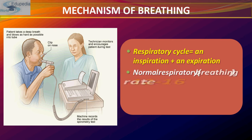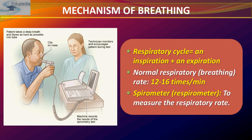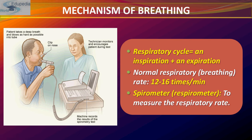The respiratory cycle consists of one inspiration plus one expiration. The normal breathing rate is 12 to 16 times per minute. A spirometer is a respirometer that measures the respiratory rate — the patient takes a deep breath and blows as hard as possible into the tube, the technician monitors and encourages the patient during the test, and the machine records the result of the spirometry test to check whether the rate lies within 12 to 16 breaths per minute. A clip is fitted on the patient's nose so they cannot inhale or exhale through it.